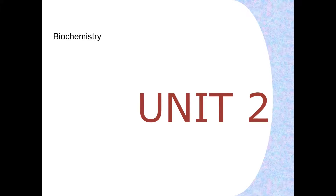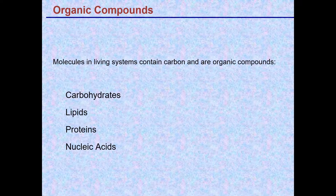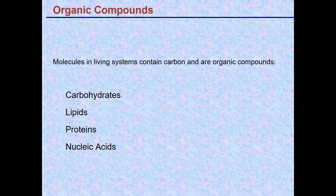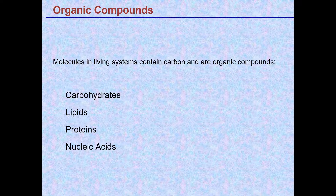This is Unit 2 Part 1 on biochemistry. There are essentially four major classes or groups of molecules found in living systems. These are organic compounds — organic molecules. They include carbohydrates, lipids, proteins, and nucleic acids.